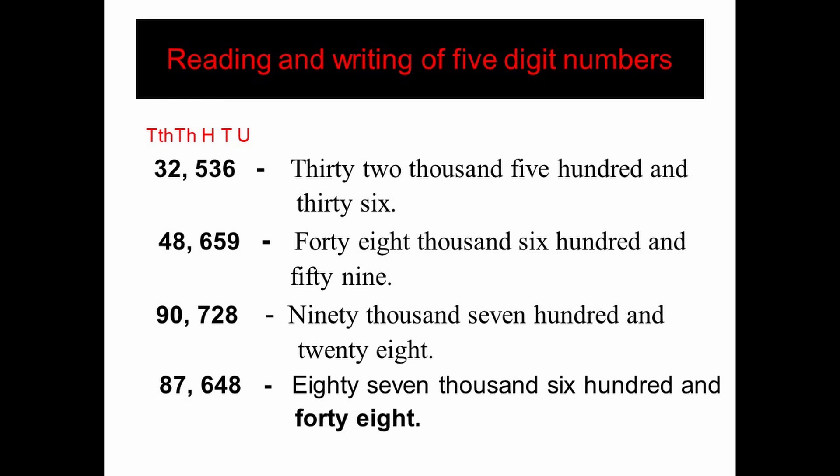The number 32536 is read as thirty two thousand five hundred and thirty six — written in words as thirty two thousand five hundred and thirty six. Second example: forty eight thousand six hundred and fifty nine (48659). Next: ninety thousand seven hundred and twenty eight (90728). Next: eighty seven thousand six hundred and forty eight (87648). Read along with me.